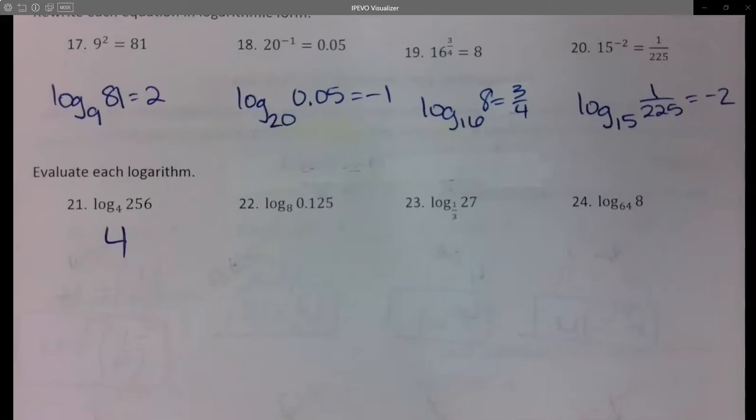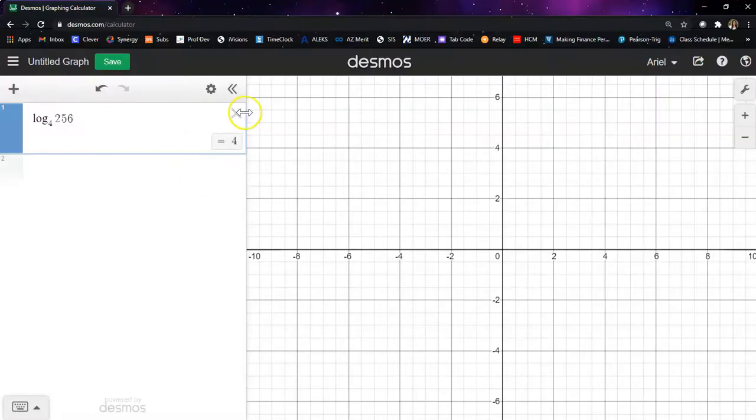So 22 will work. So then this one is going to be log base 8 and then 0.125, which gives me negative 1.